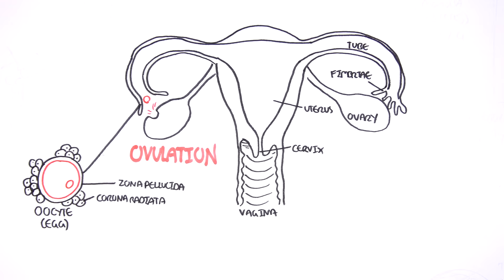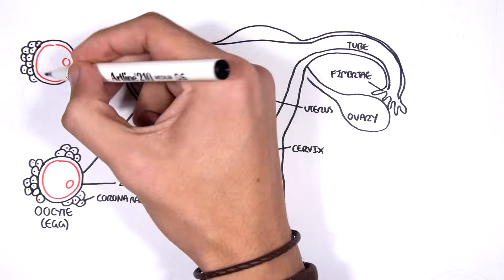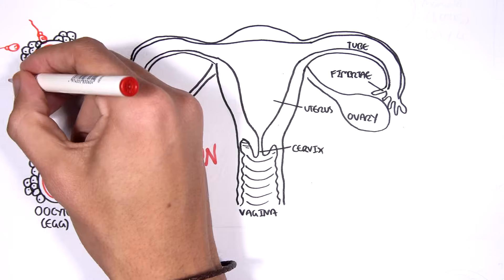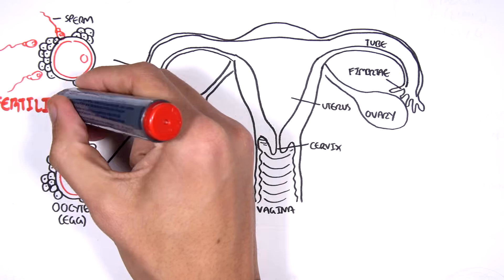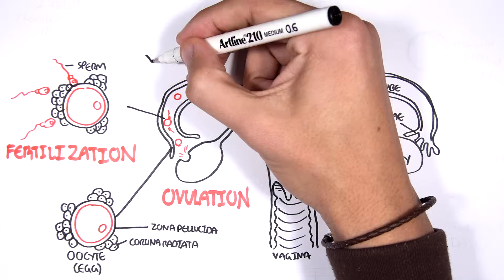If this oocyte is not fertilized by a male sperm, what is known as a period occurs. However, if sperm is swimming along in the uterine tube and the sperm meets and penetrates the oocyte, this process is then known as fertilization. The sperm is able to penetrate the zona pellucida using special enzymes on its head.